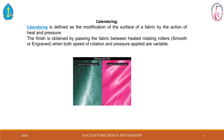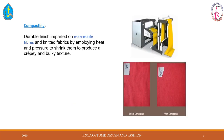Compacting — the name itself refers to shrinking the fabric to produce a crepe and bulky structure. For man-made fiber fabrics, heat and pressure are applied to introduce controlled shrinkage. That process is known as compacting. Here I have shown a compacting machine and some samples of fabric before compacting and after compacting.